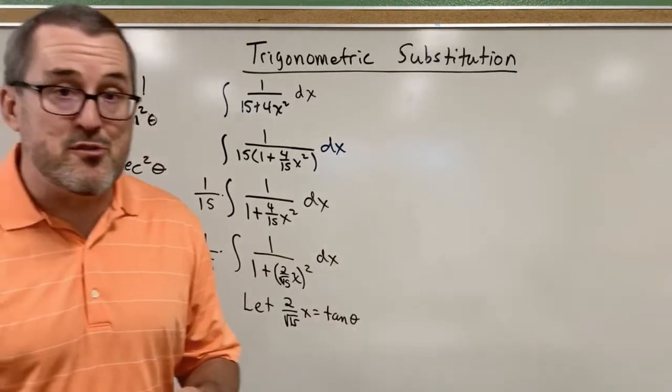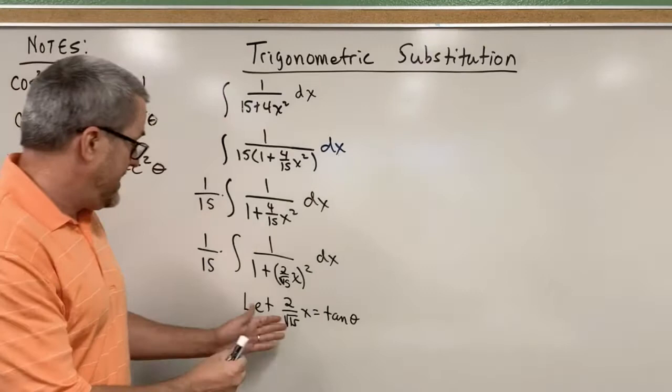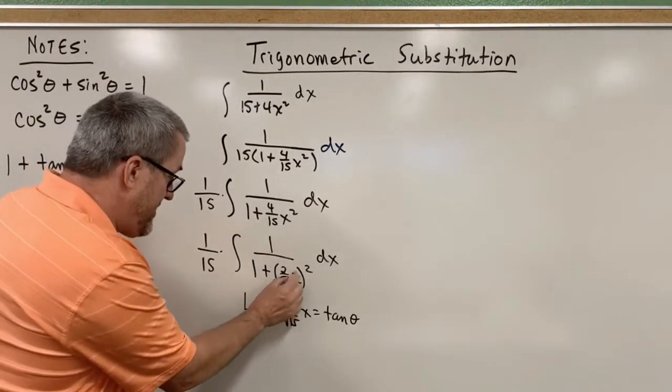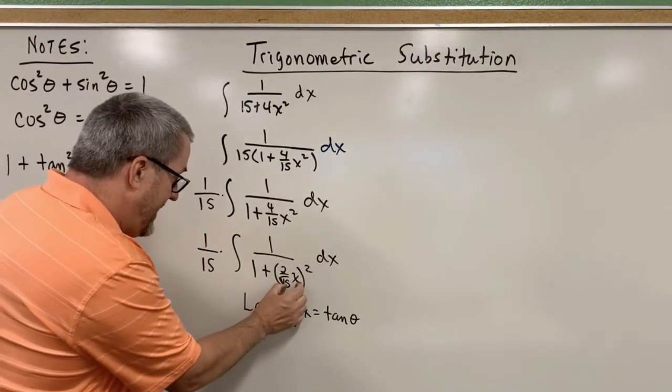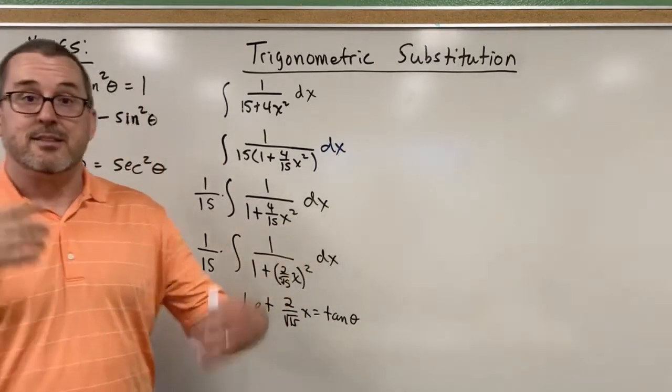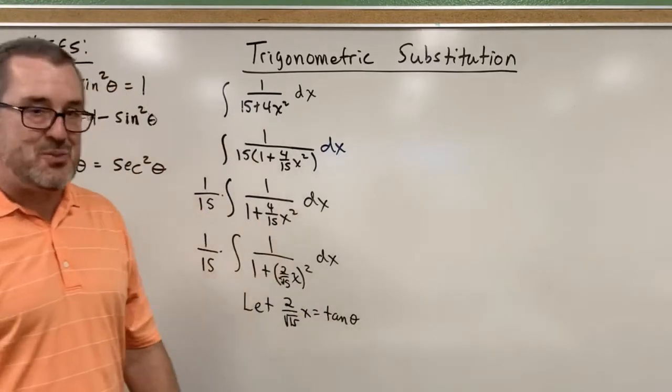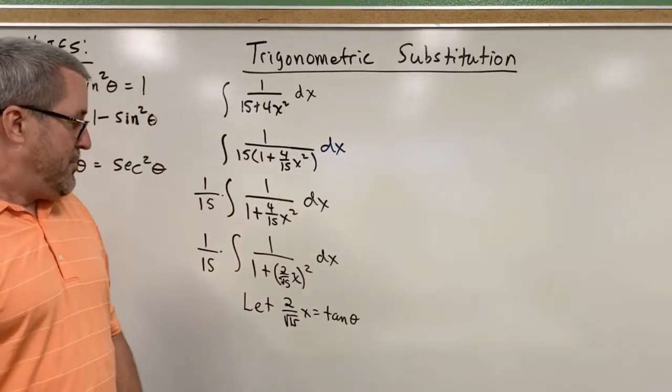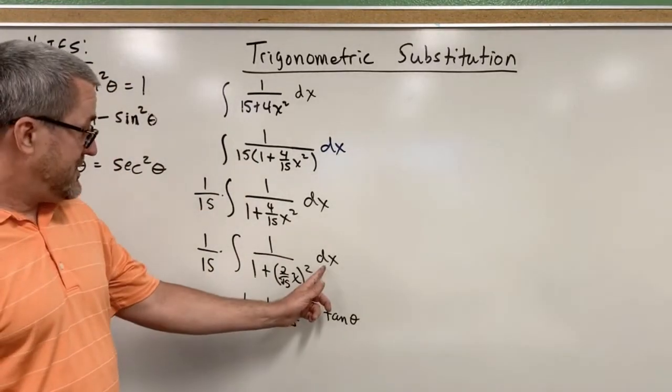Now we just make that move, and then we deal with the consequences. If I make this move, then this quantity will become tangent of theta squared, and 1 plus tangent of theta squared is secant squared, and things will work out really nice.